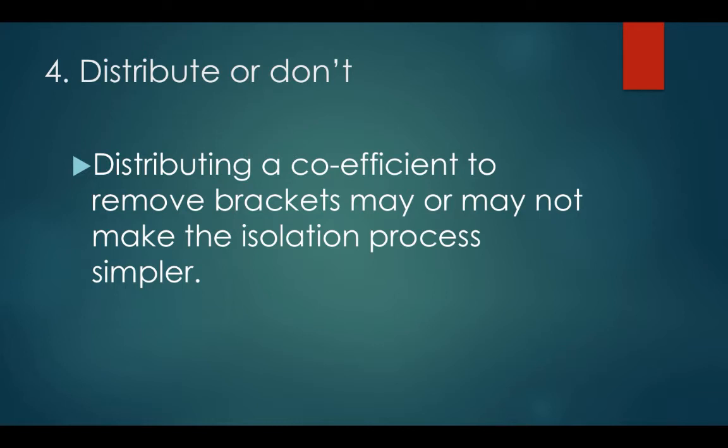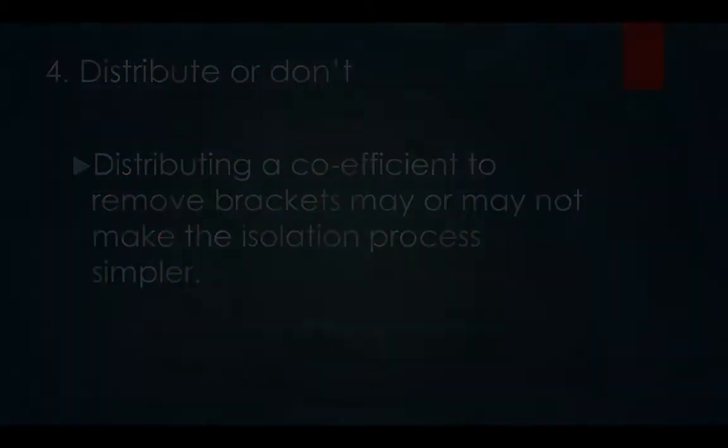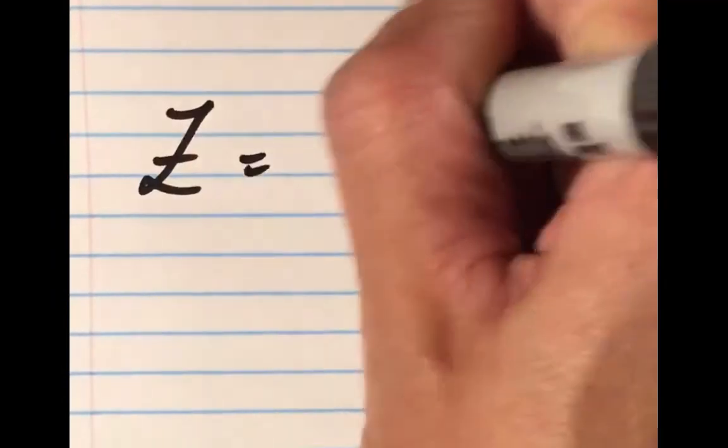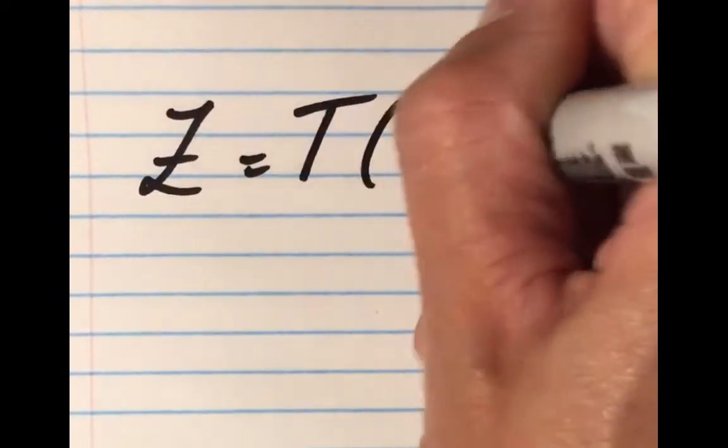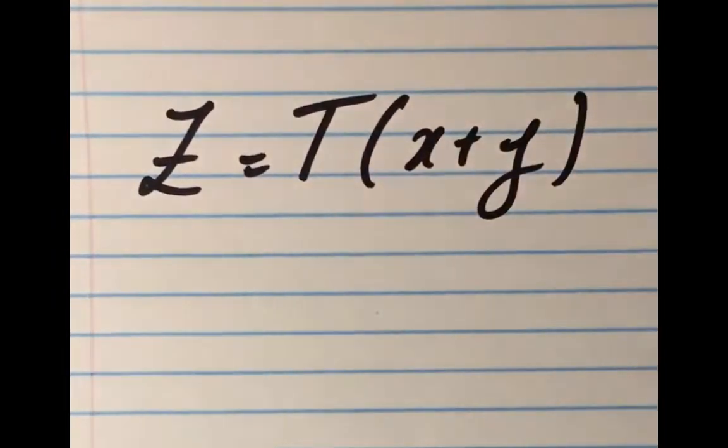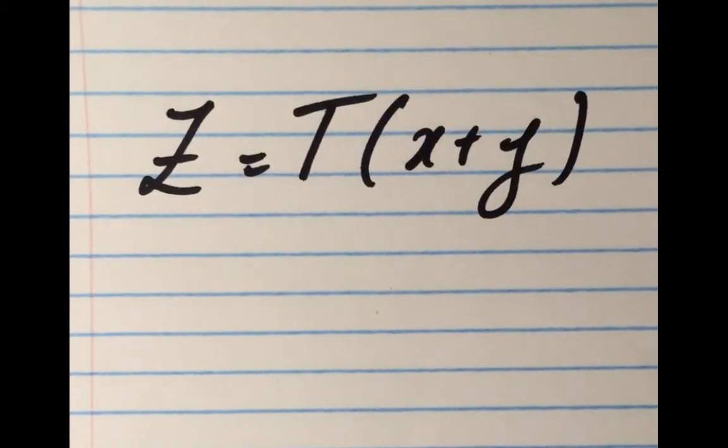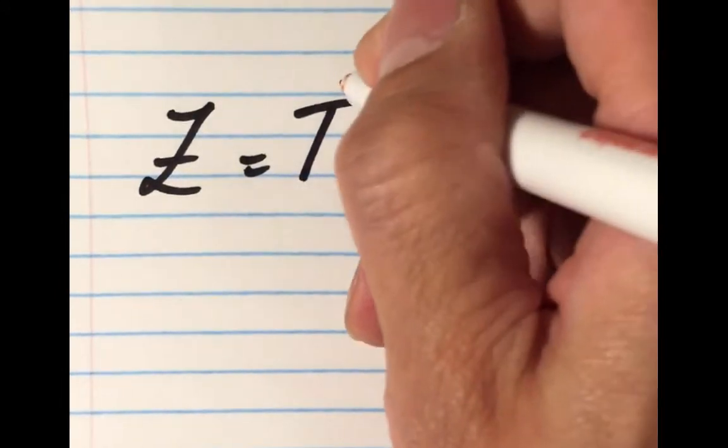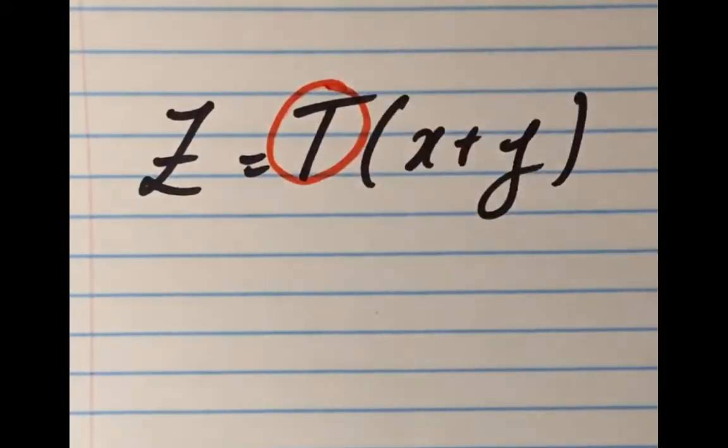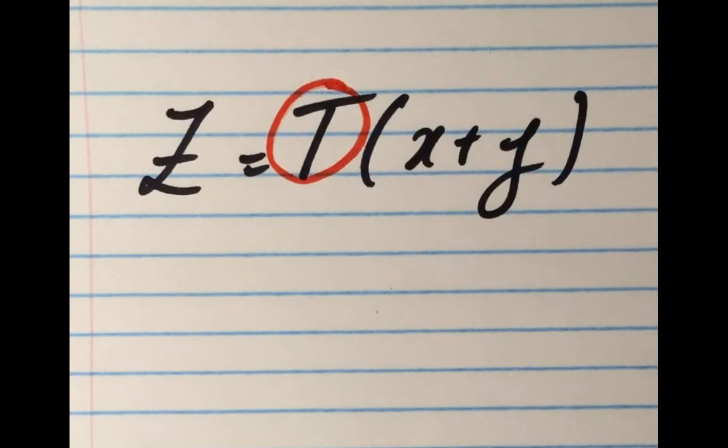In isolating the variable, this may or may not complicate things. Let's use the equation z equals t times x plus y as our example. Let's assume that we're solving for t. I'll highlight it in red.